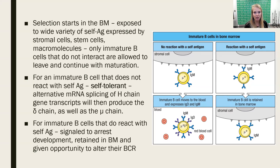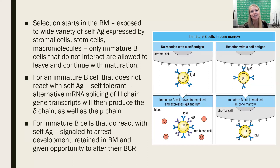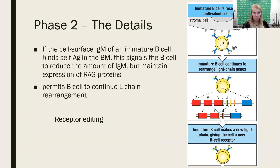Self-tolerant B-cells have heavy chain and light chain variable regions rearranged in a way that they don't interact with self-antigen, so they're able to move on to the next stages of development. But for immature B-cells that do interact with self-antigen, they're going to be arrested at that stage of development and retained in the bone marrow. Instead of executing them right away, this is an education process — we let the B-cell continue to try to change its receptor before we let it out. We'll look at how this all happens as we look at the details of phase two.